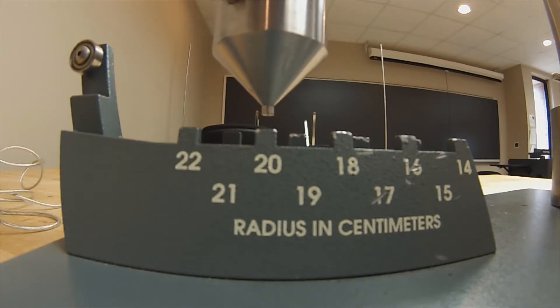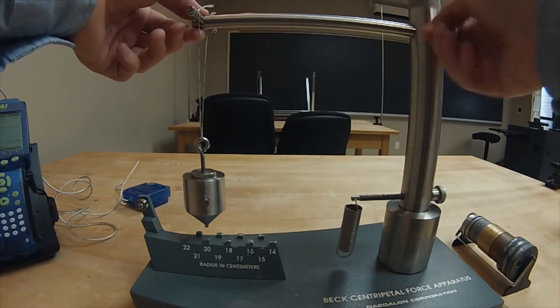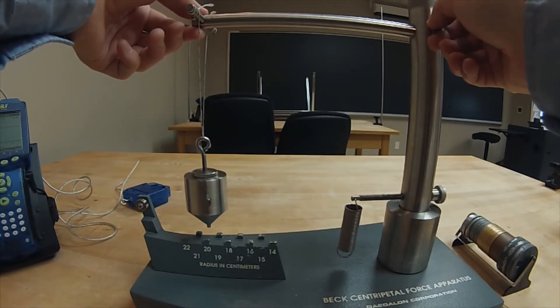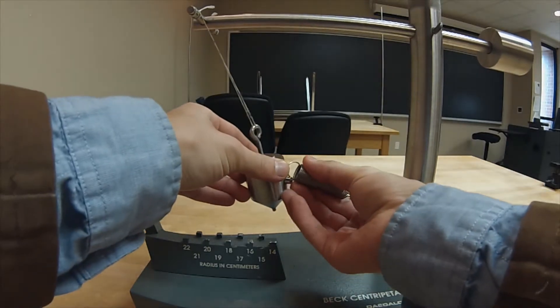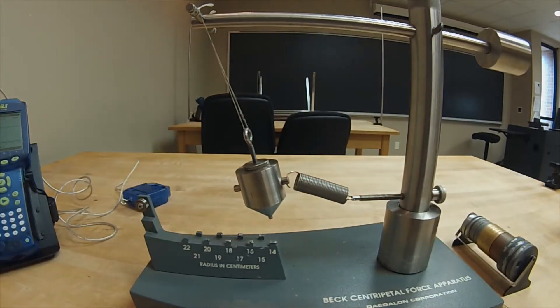Once we are satisfied that the tip of the bob hangs freely above the pertinent marker on the radial scale, we can reattach the spring to the side of the bob. At rest, the spring should hold the bob at an angle with respect to the vertical. In other words, the tip of the bob should no longer be aligned with the previously chosen mark on the radial measuring scale.